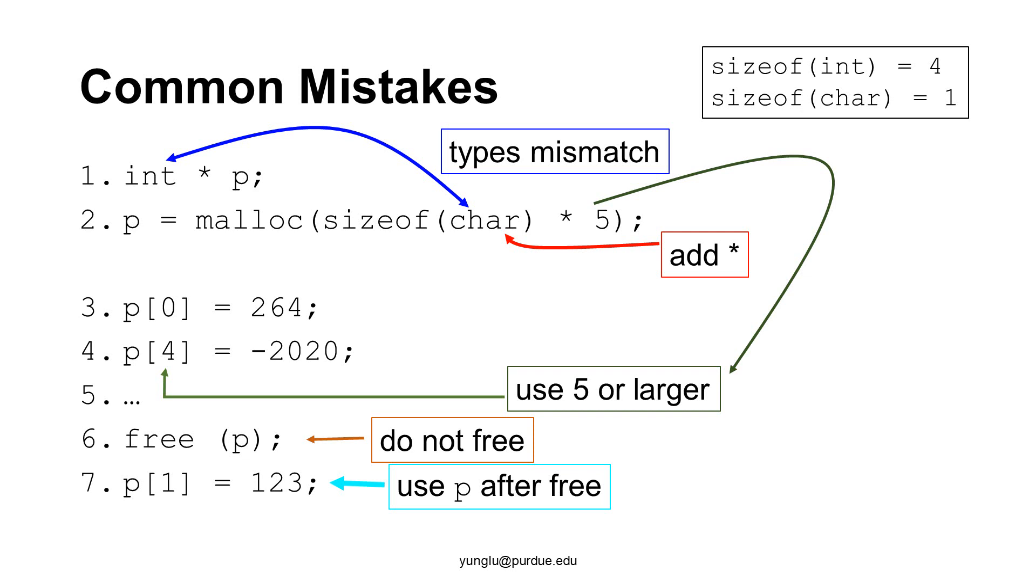Another common mistake is not to free memory and cause memory leak. After freeing, p is no longer valid address for heap memory. Thus, we must not use p after calling free.